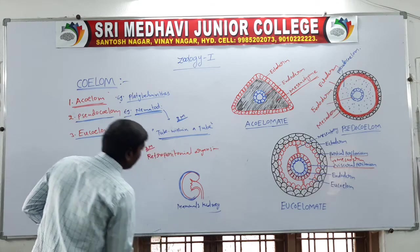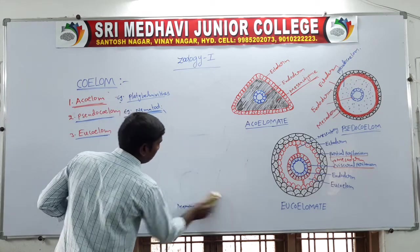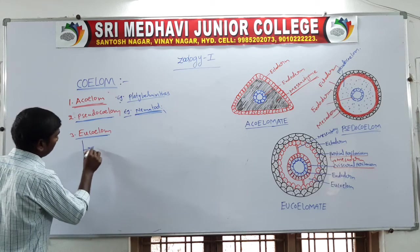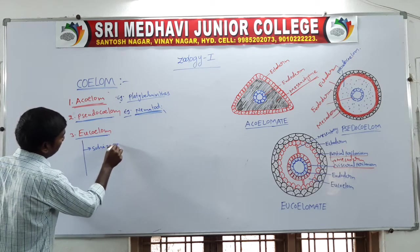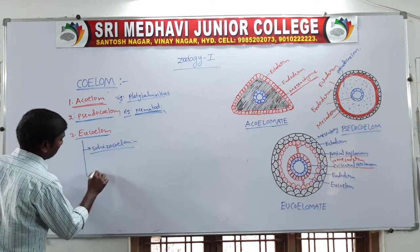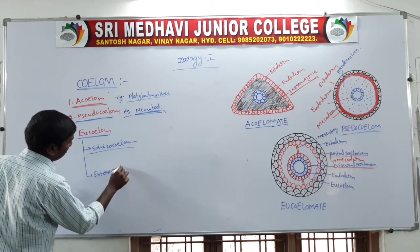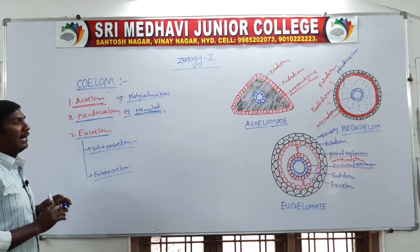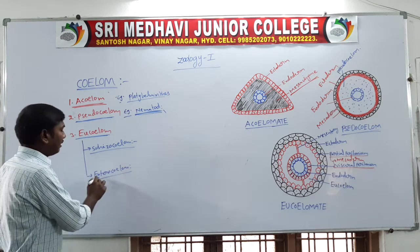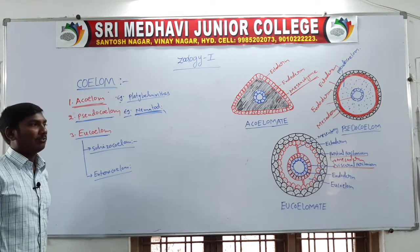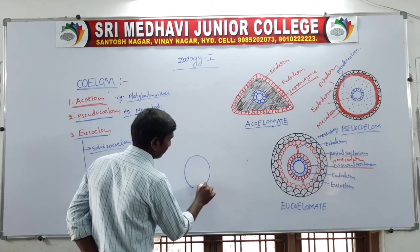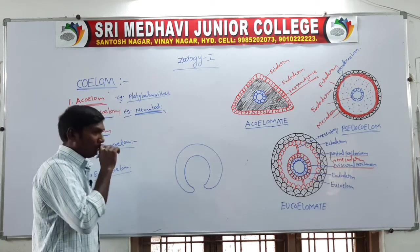The eucoelomate is divided into two types. The eucoelomate or true coelom contains two types: first, schizocoelom; second, enterocoelom. First one, schizocoelom: the mesodermal membrane undergoes splitting to form the coelom.